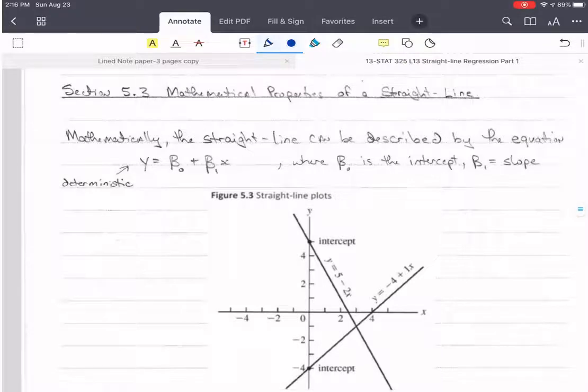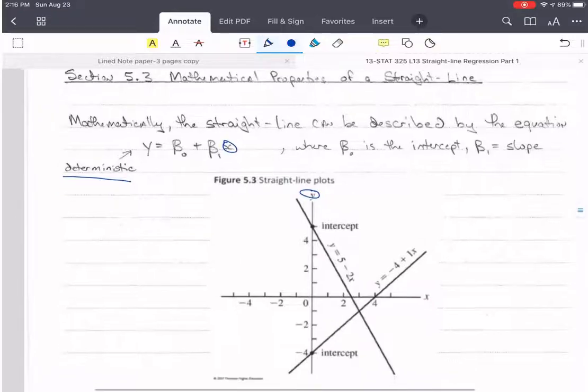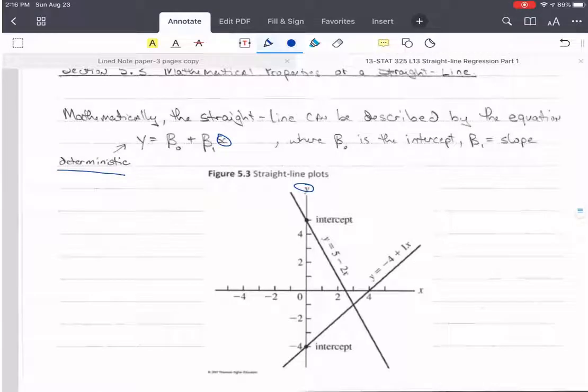So now let's briefly talk about the mathematical properties of a straight line. First off, a straight line, mathematically, is a deterministic line. We're going to use y as the vertical axis, x as the horizontal axis. But in this course, instead of using b and m for intercept and slope, we're going to use betas. So beta 0 is going to be our intercept, and beta 1 is our slope. And this describes the straight line.